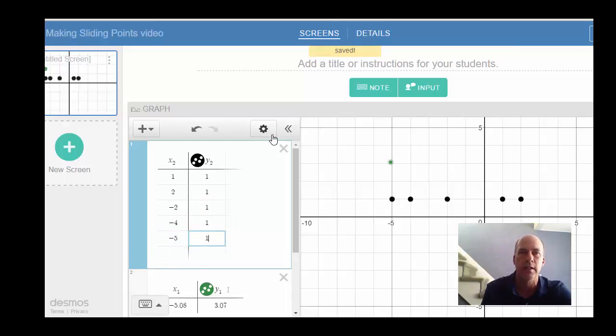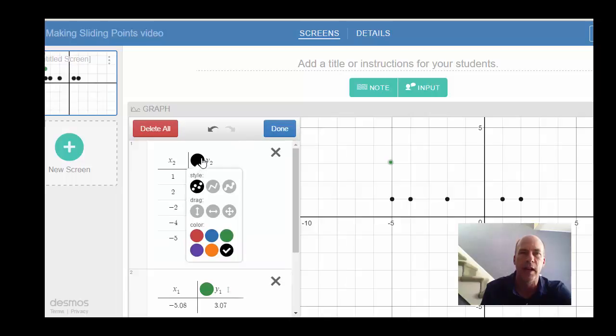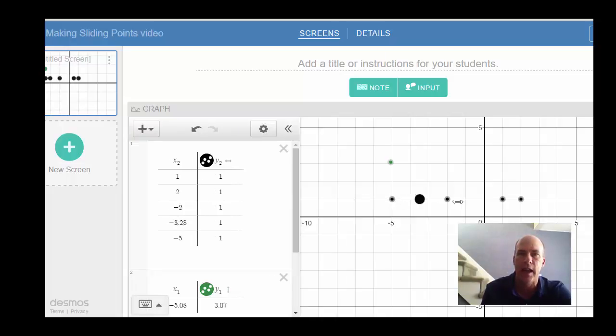Five black points there. Use the Settings gear, click the black point, make them all drag, and notice there's this little ghosted outline around them now. That indicates that these are movable points, and I can now slide these wherever I like. So this is how you can add movable points to your Desmos Activity Builder presentations.